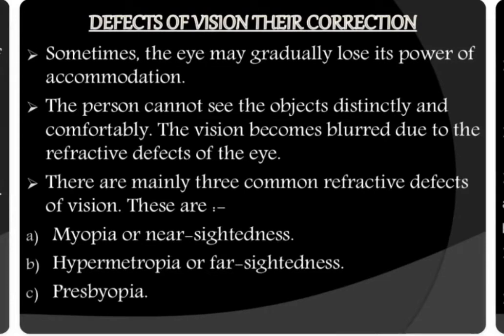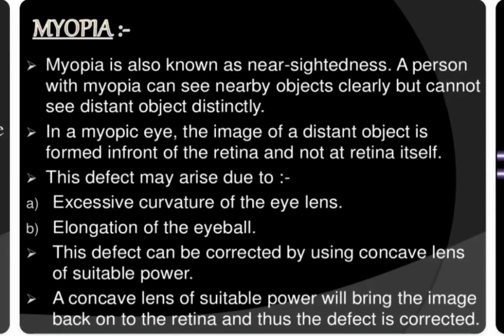Now coming to defects of vision. Sometimes we gradually lose the power of accommodation — some of us cannot make the lens thick, some cannot make it thin, some cannot see colors, and some cannot see the axis properly. These cause blurred vision due to refractive defects. There are mainly three types of defects in our syllabus: myopia or near-sightedness, hypermetropia or far-sightedness, and presbyopia.